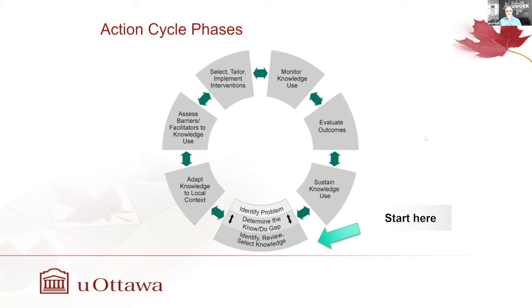Starting at the bottom: some frameworks started with 'we have a problem,' while others started with 'we have a solution — there's knowledge that something works.' What was really key was you need to determine the know-do gap, or the evidence-practice gap: what would be ideal practice or policy, and what is currently happening? As a group, you decide: do we need to take action and reduce that gap to be more in line with best practice or best policy? That's the initiation of the first phase — do we need to do anything, or are things fine the way they are?